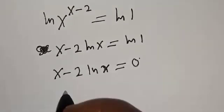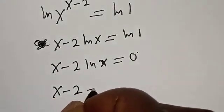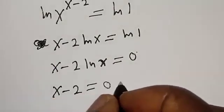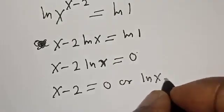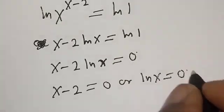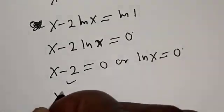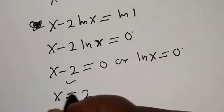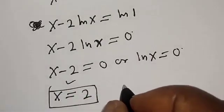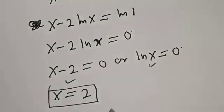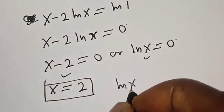Then we have two cases here: s minus two is equal to zero, or natural log of s is equal to zero. From the first case, s is equal to two — that is the first value of s. From the second case, we have natural log of s equal to zero.